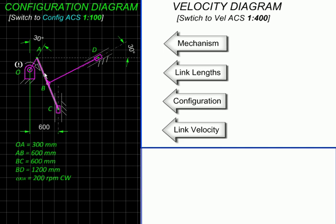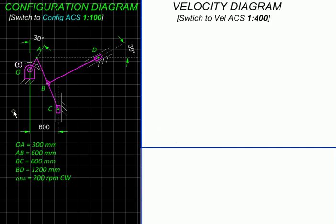Now, this being a single degree of freedom mechanism, in theory knowing the velocity of one link should allow us to calculate the velocities of all other links. So let us start by drawing the mechanism to the given scale first.